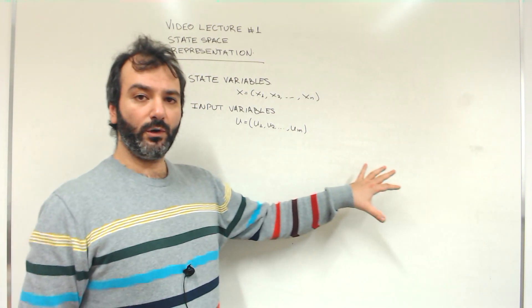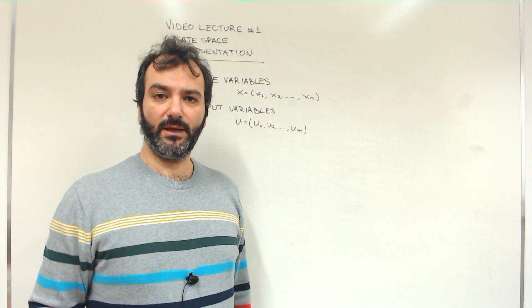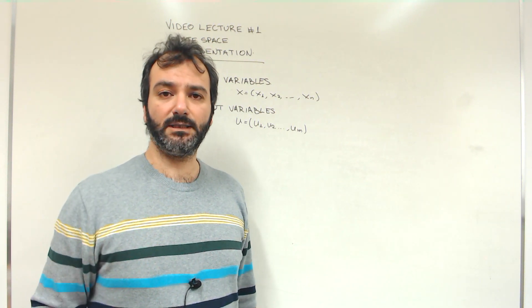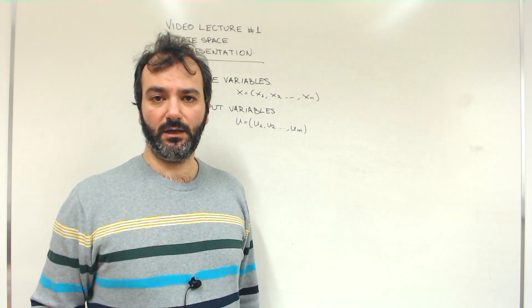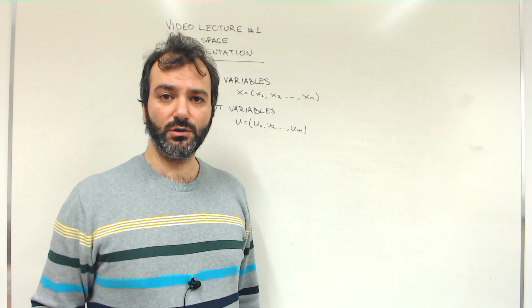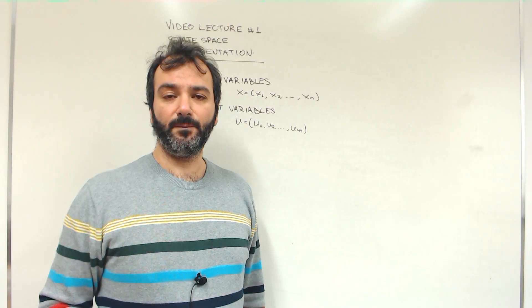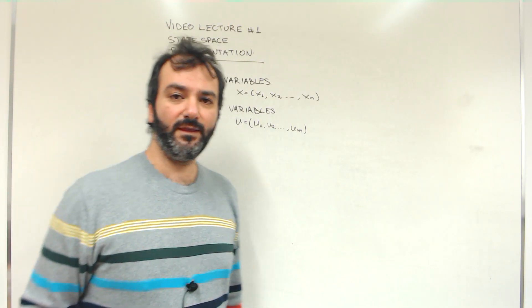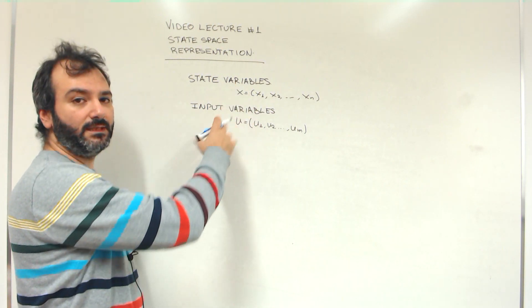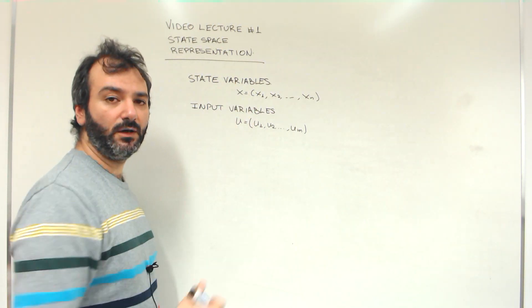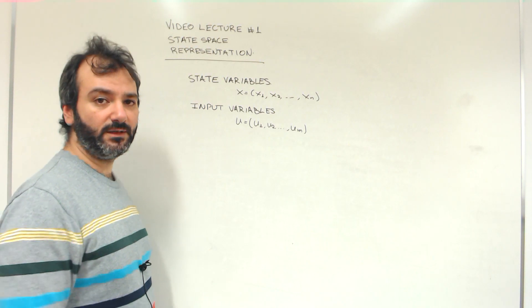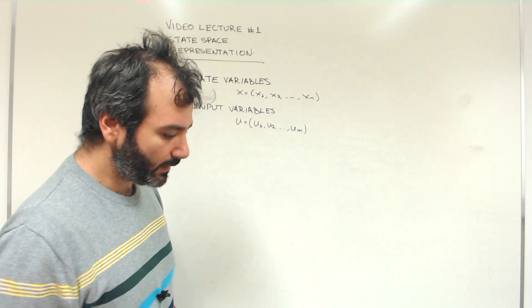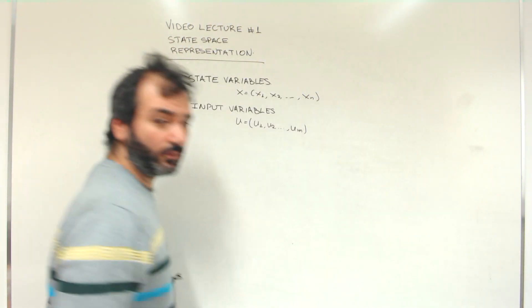We're looking for appropriate mathematical ways to describe the relationship between inputs and state variables. One possible way to go is to use differential equations, or in other words, ordinary differential equations. These are equations that involve the state and its first, second, or higher order derivatives, as well as the input and its derivatives. We need to introduce some notation.